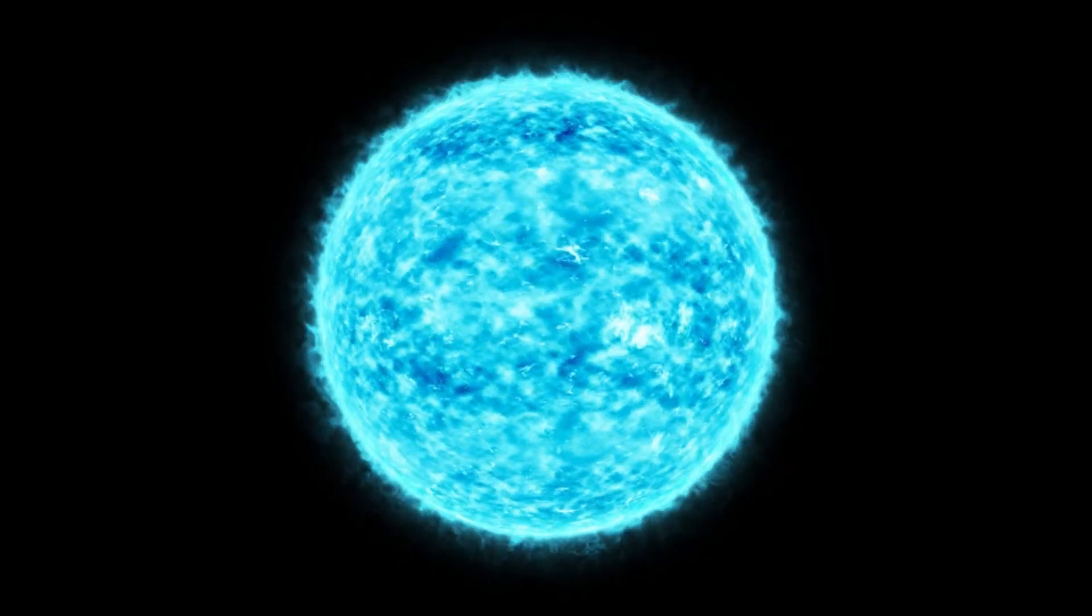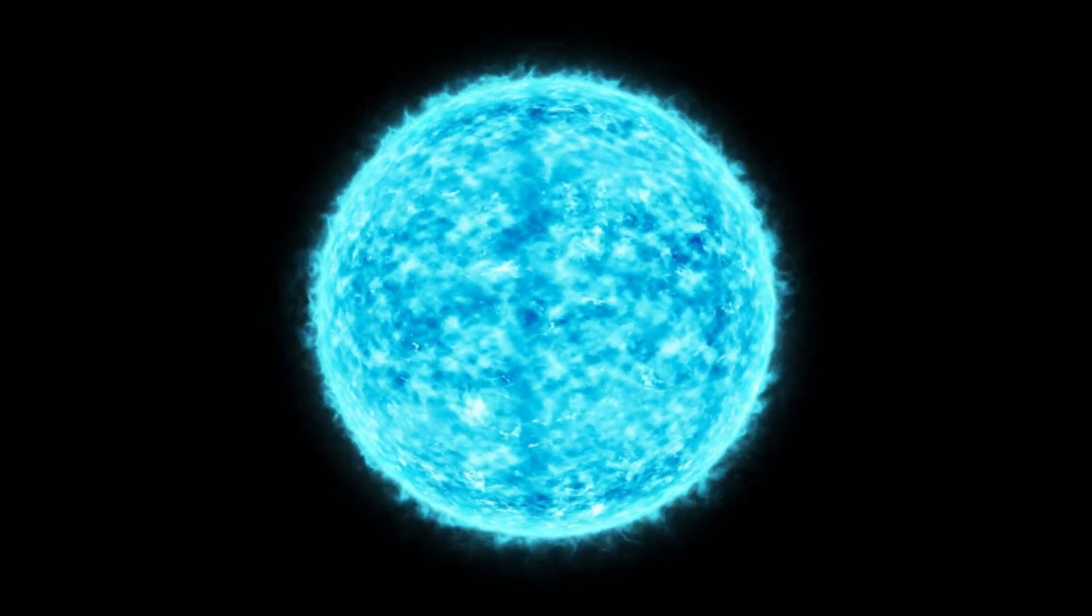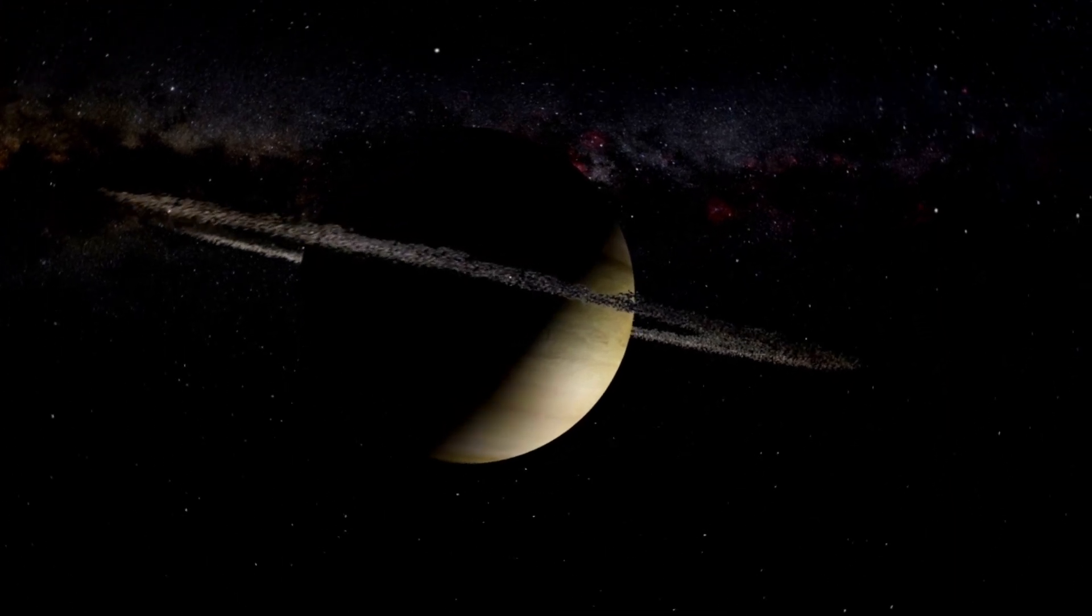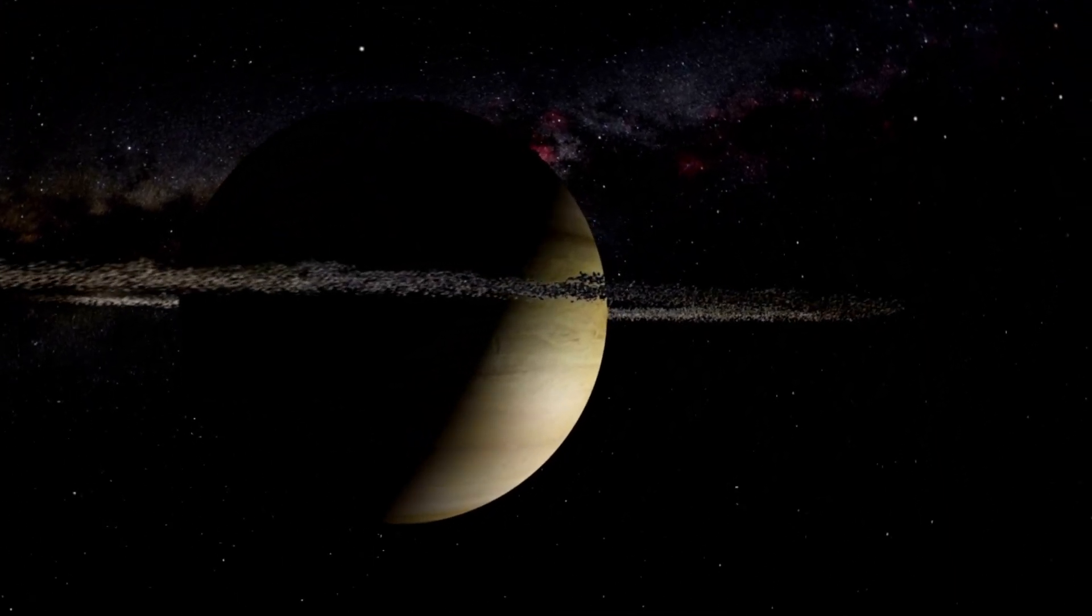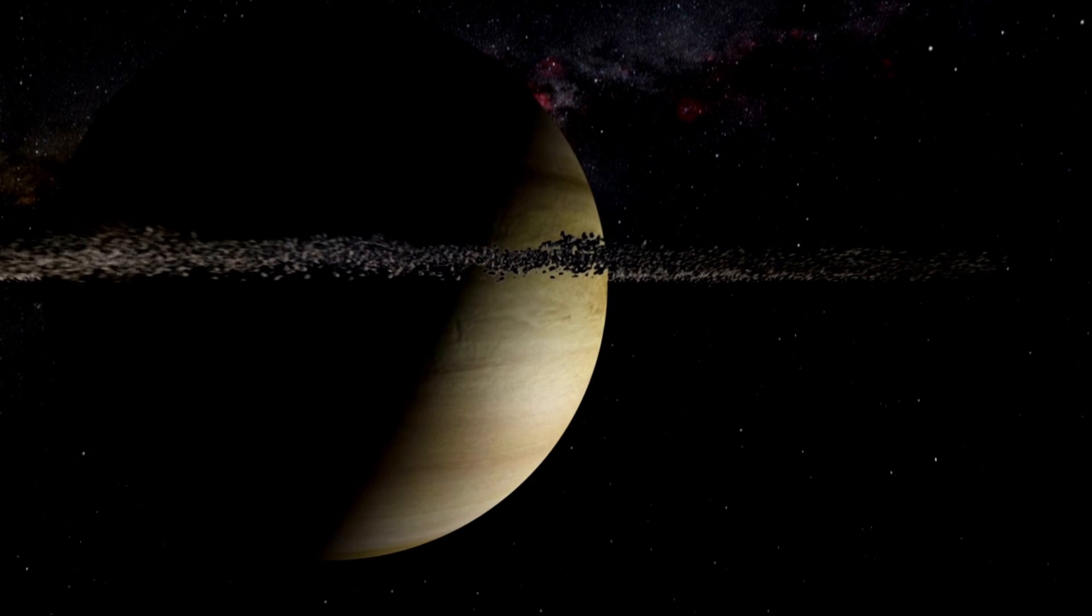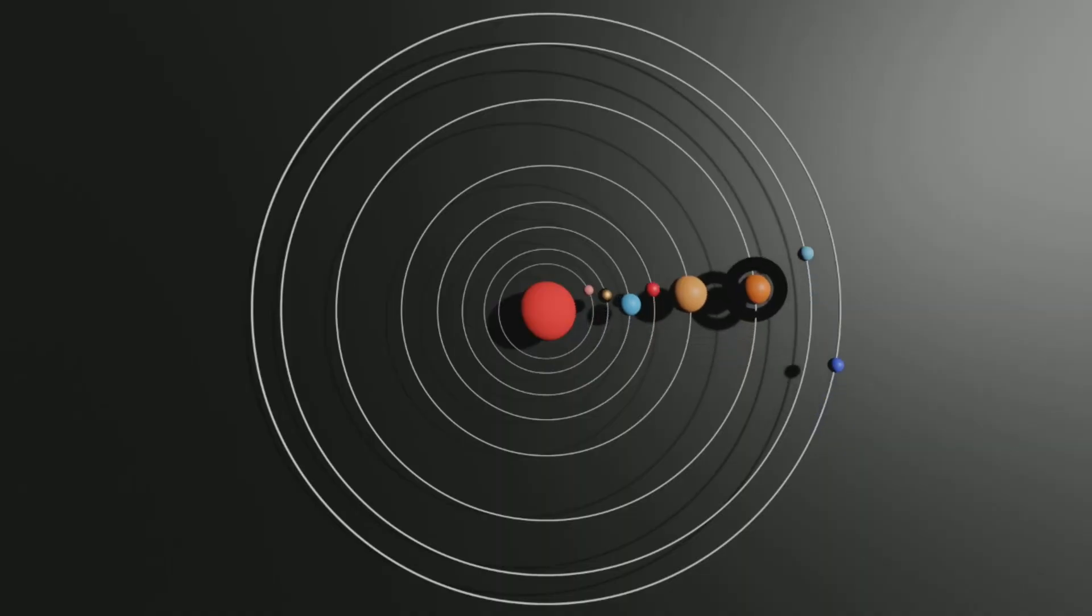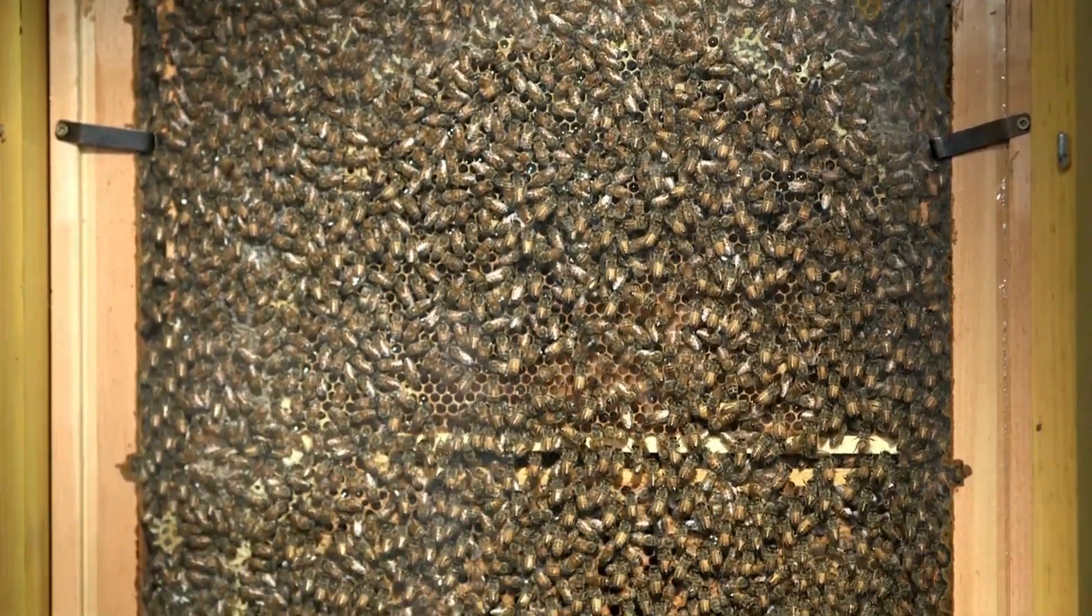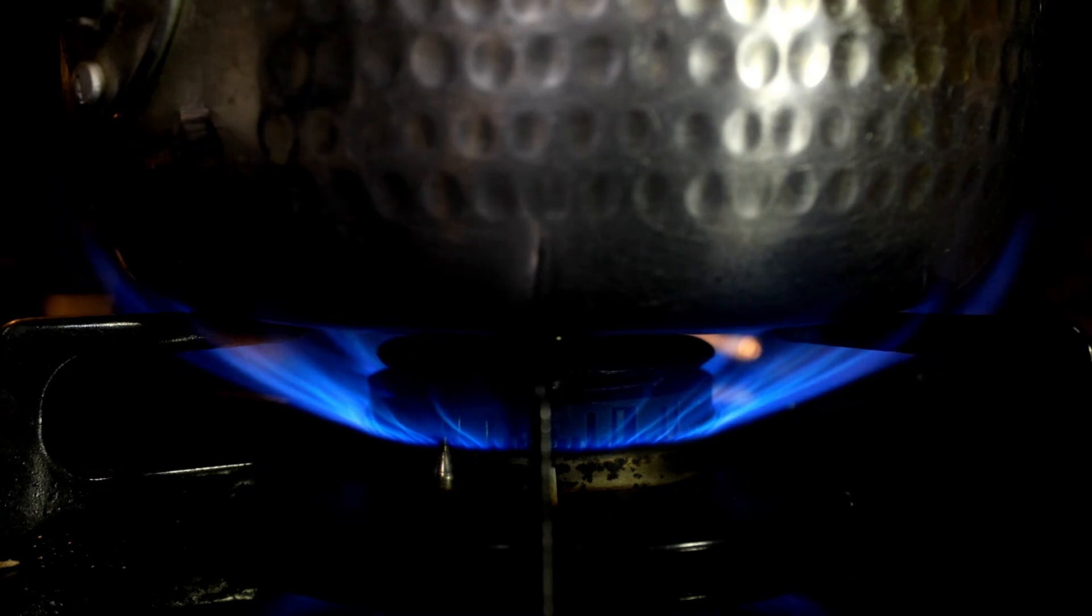Despite the impossibility of these scenarios, they make us appreciate the stability and life-sustaining conditions of our current planet. Earth may be small in comparison to the sun, but its size, gravity, and environment are perfect for supporting the wide diversity of life we enjoy. The sun, for its part, may seem like just another star in the vast universe, but to us, it is everything.